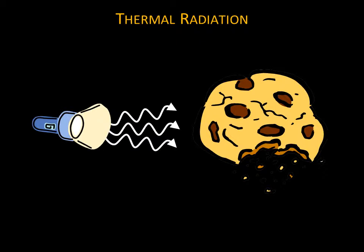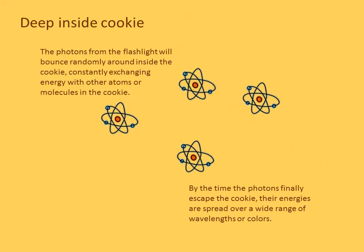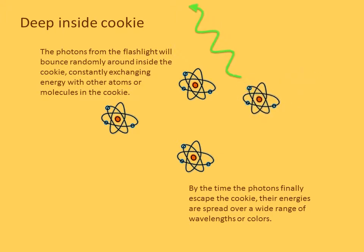Consider our cookie — an ideal cookie that absorbs all the photons that strike it and does not allow photons inside of it to escape easily. If we shine photons on our cookie, the atoms in it absorb the light. The photons from the flashlight will bounce randomly around inside of the cookie, constantly exchanging energy with other atoms or molecules. By the time the photons finally escape, their energies are random and spread over a wide range of wavelengths or colors. Therefore, if we take a spectrum of our cookie, it will have all the colors — it will be continuous.